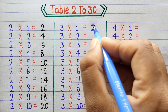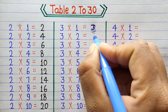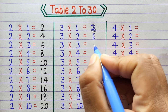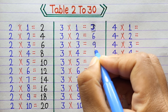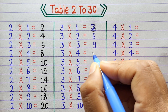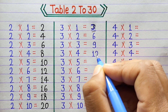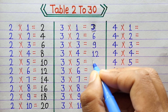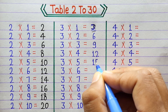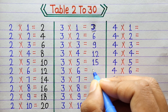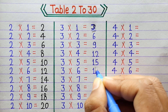3×1=3, 3×2=6, 3×3=9, 3×4=12, 3×5=15, 3×6=18.